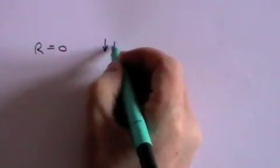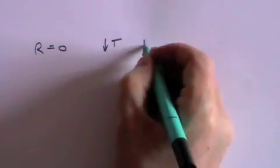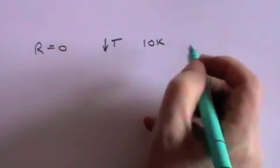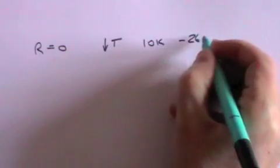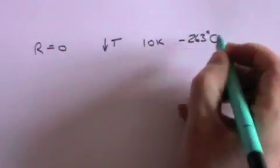A substance becomes superconducting when its resistance is zero. And that usually happens at very low temperatures, often as low as of the order of ten degrees Kelvin, which is minus 263 degrees Centigrade.